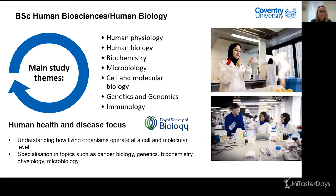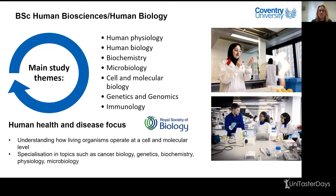If you're interested in more broadly human biosciences and human biology, and you don't particularly want to be a biomedical scientist but would like to go into a human biology-based role, then these degrees are probably more suitable for you. Human biosciences and human biology encompass the same sorts of themes but have more of a human health and disease focus, including human physiology, human biology, biochemistry, microbiology, cell and molecular biology, genetics, genomics and immunology. Also look out for courses accredited with the Royal Society of Biology.